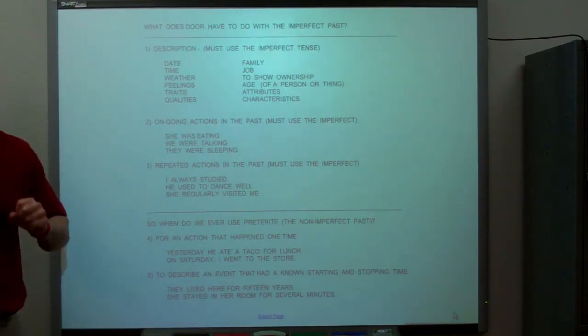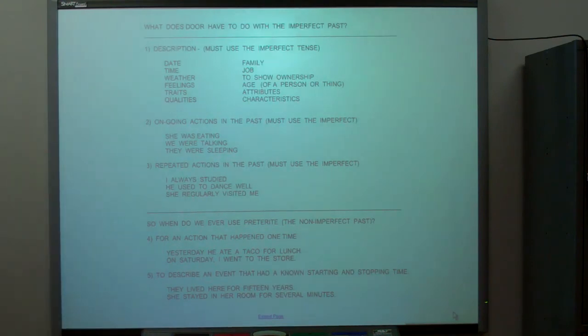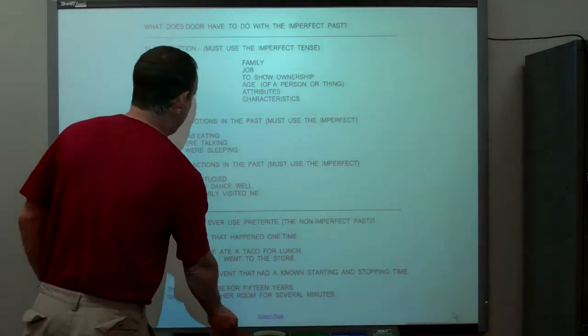Also, any time it's ING in the past, it's this new grammar pattern we're about to learn called imperfect. She was eating. That's imperfect. We were talking. Imperfect. They were sleeping.